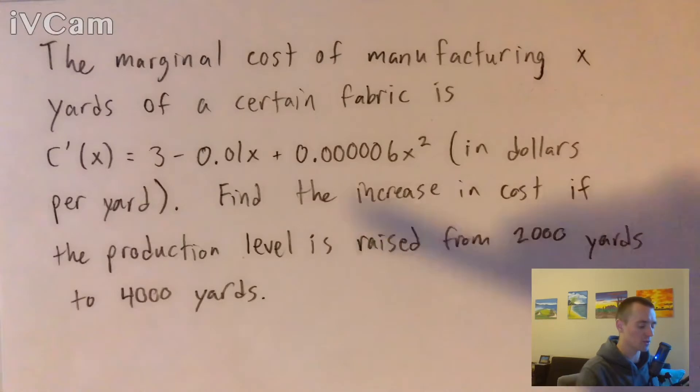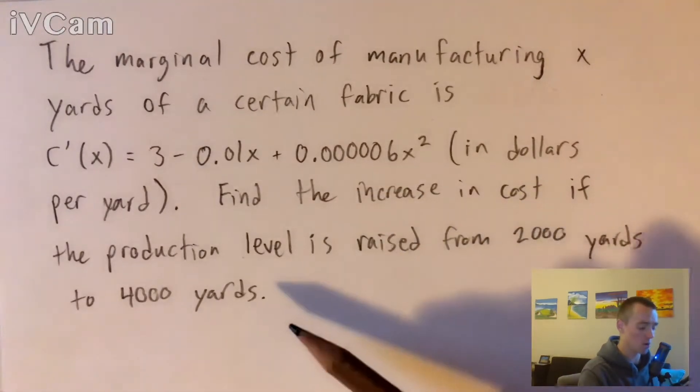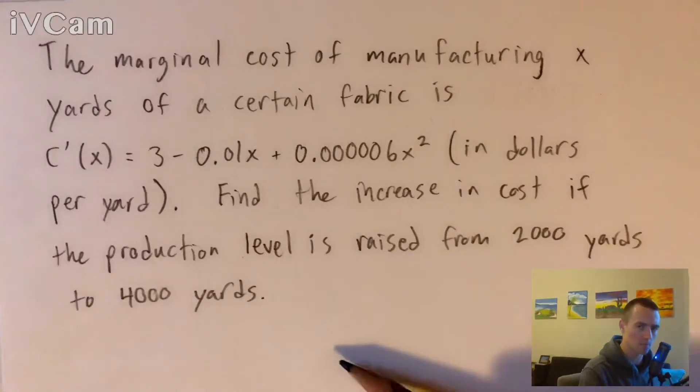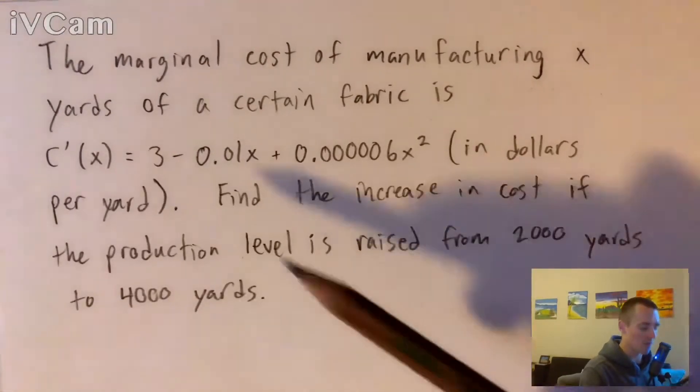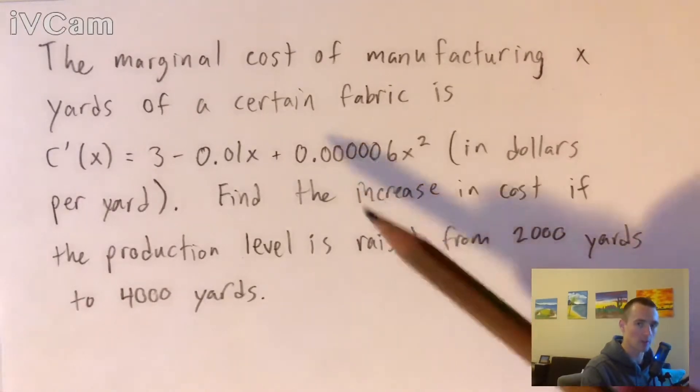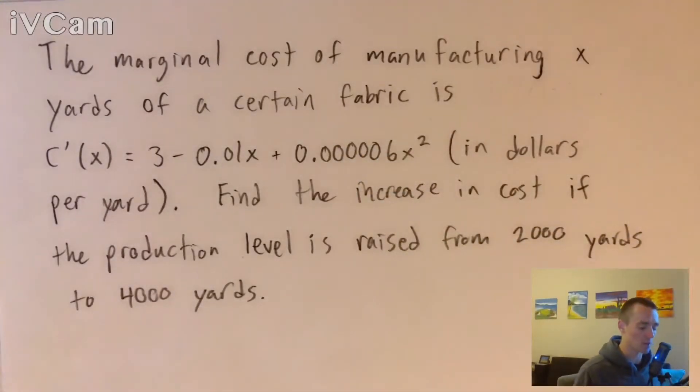Essentially, if we're trying to find the increase in total costs going from producing 2,000 yards to 4,000 yards of material, all we would need to do is figure out the anti-derivative of this marginal cost function.